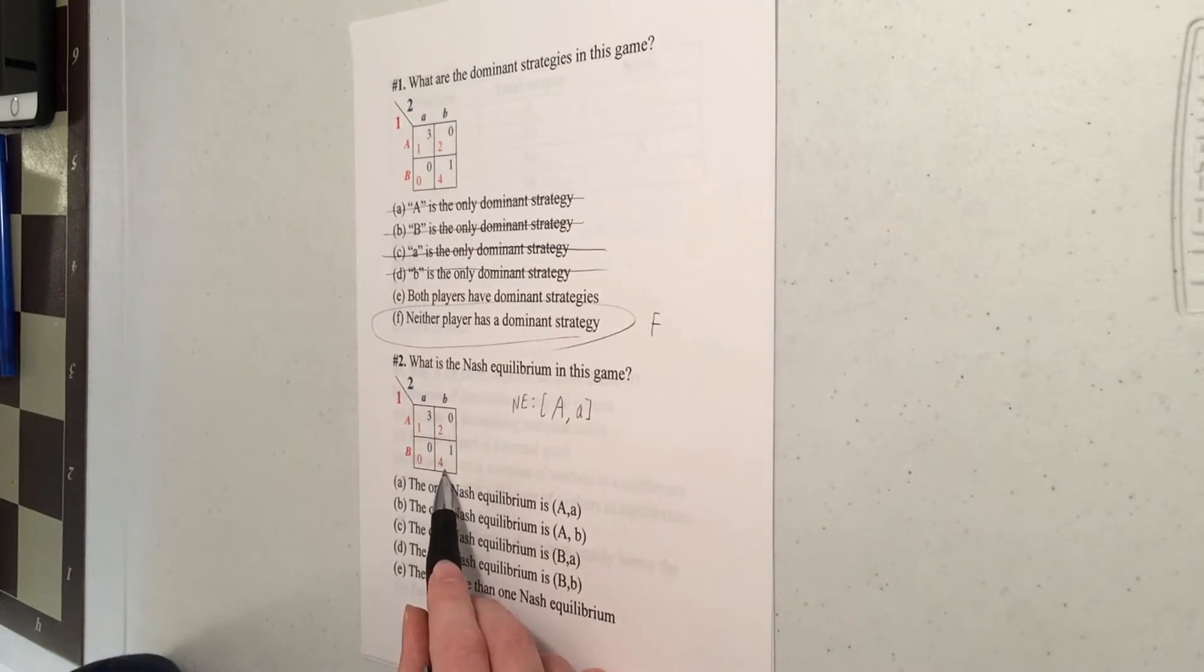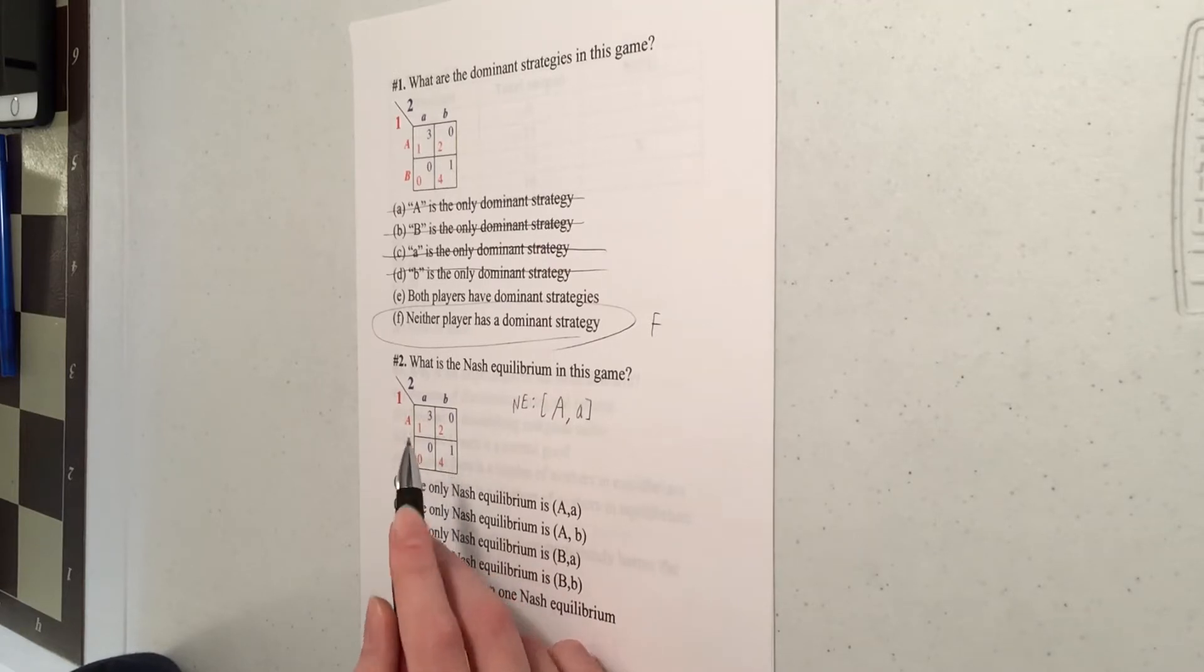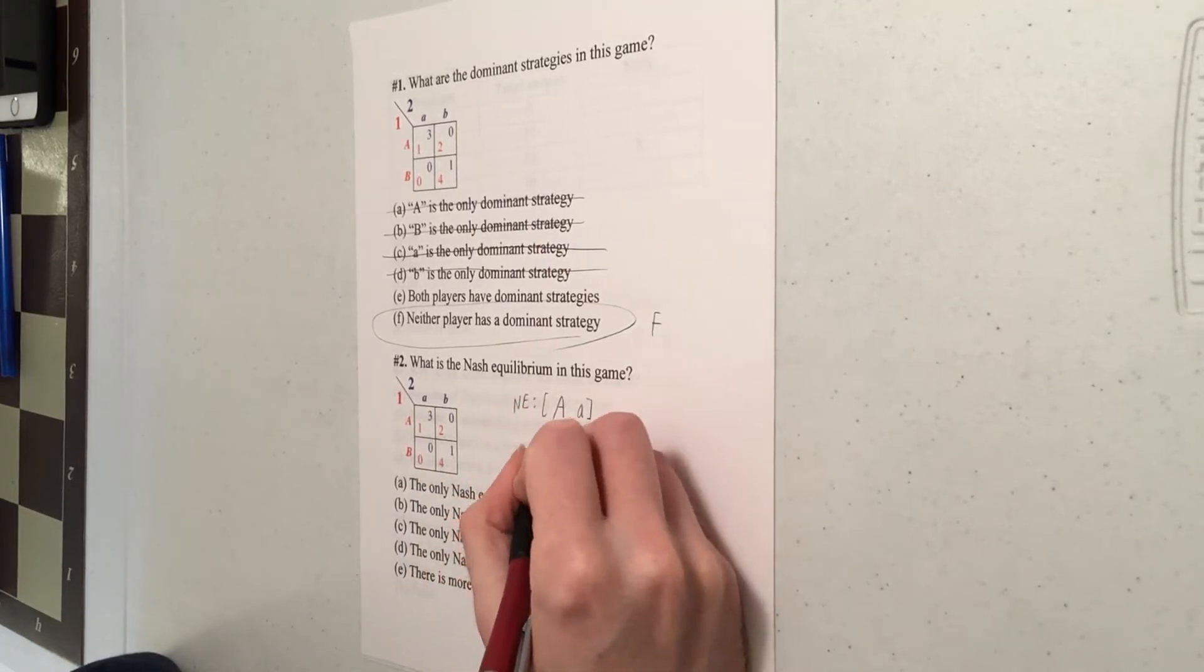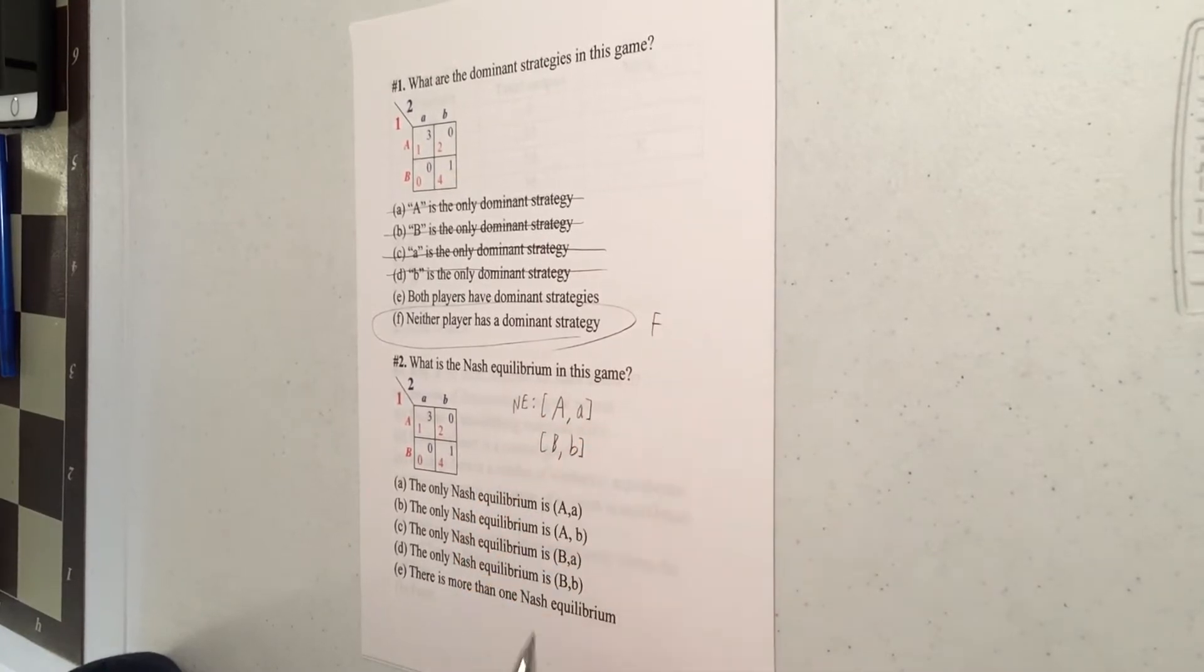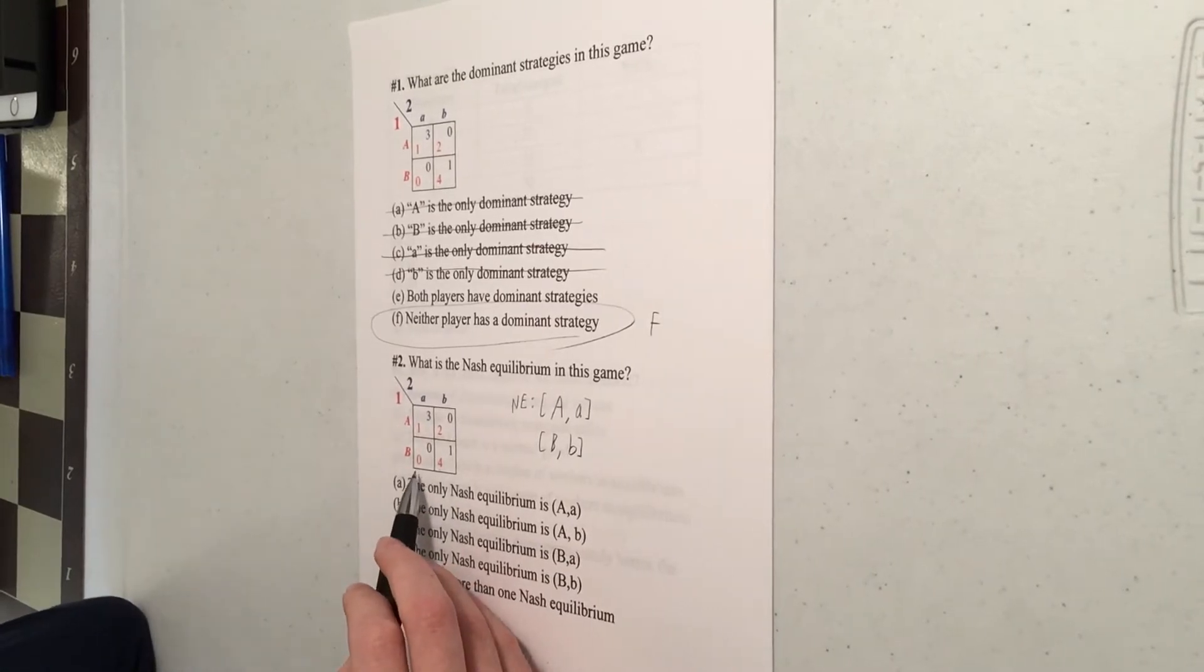How about big B little b? So player one is currently getting four. If they switch to playing big A, they get two. That's worse. So player one does not want to switch. If player two switches, they get zero from playing little a instead of getting one from sticking with B. So player two does not want to switch either because neither player wants to change. Big B little b is also a Nash equilibrium.